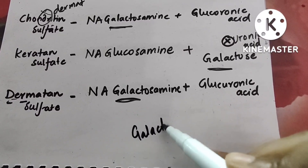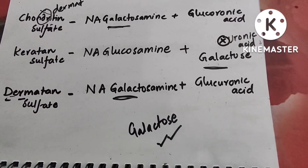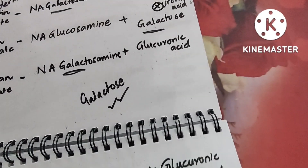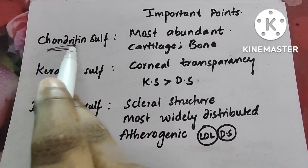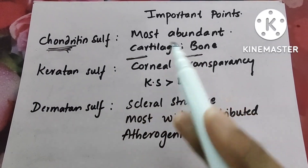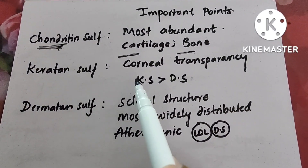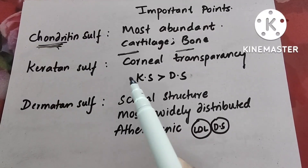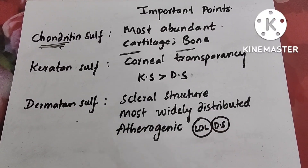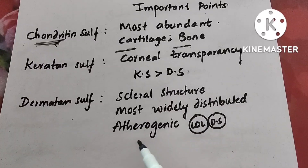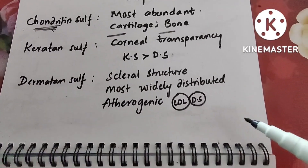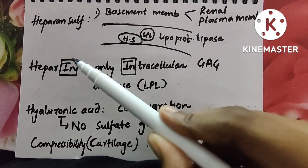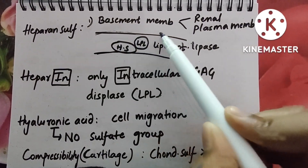Now let us discuss individual GAGs and the important structures in which they are present. Chondroitin sulfate — the name itself tells you: chondra means cartilage. It is the most abundant GAG overall and is present in cartilage and bones. Keratan sulfate is responsible for corneal transparency; it contributes more than dermatan sulfate to that. Dermatan sulfate is for scleral structure and is the most widely distributed because it is present in skin. It is also atherogenic because it attaches to LDL, which is bad cholesterol.